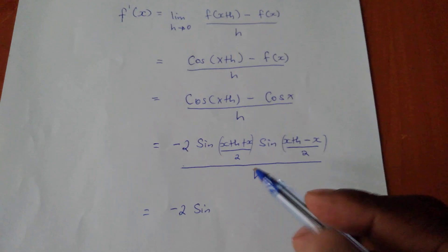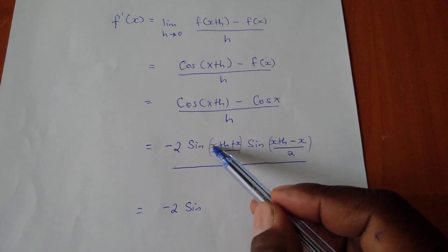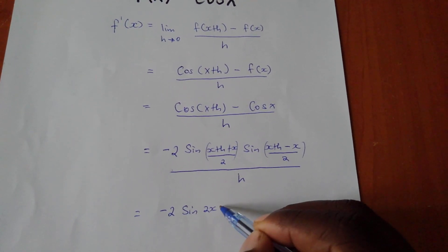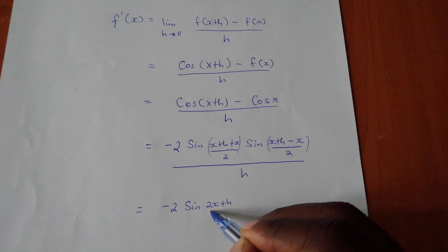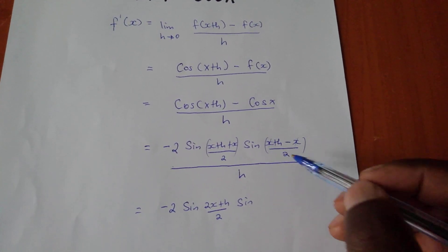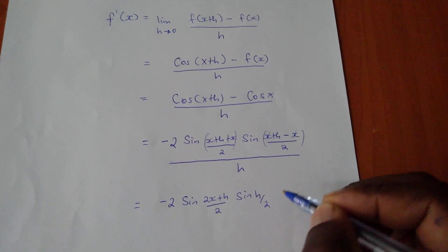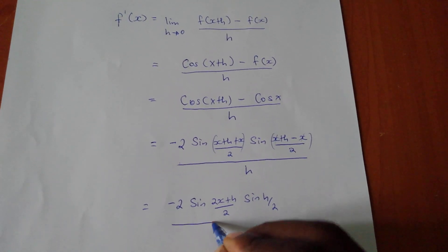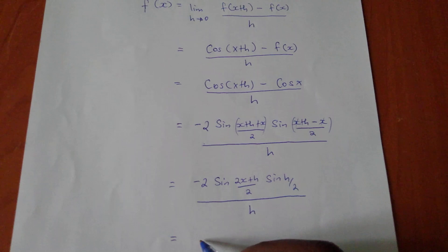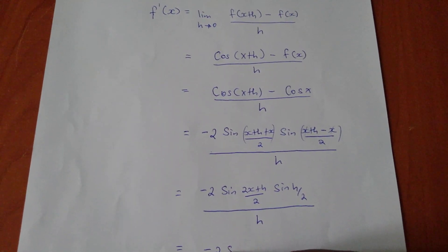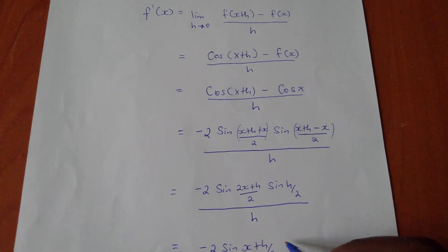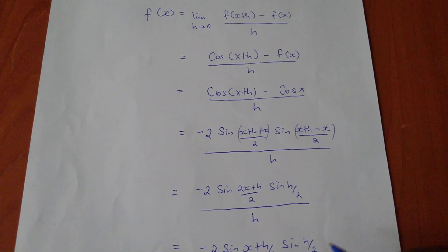Simplifying inside the arguments: we have negative 2 sine of (2x plus h) over 2, times sine of h over 2, all over h.